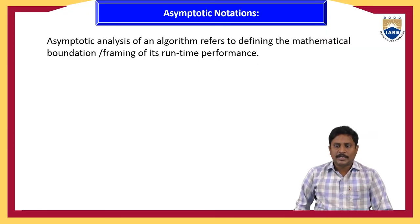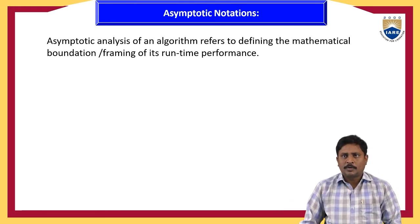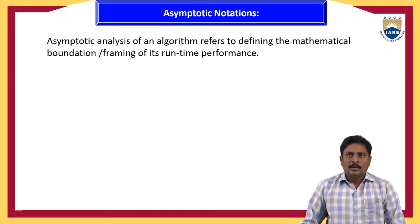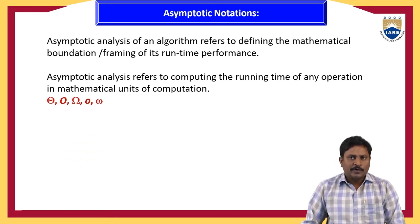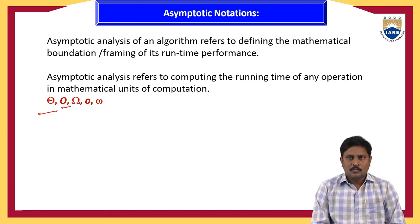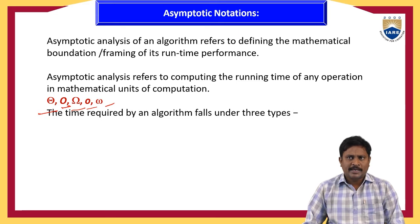First, what is meant by asymptotic notation? Asymptotic analysis of an algorithm refers to defining the mathematical foundation or framing of its runtime performance. Asymptotic analysis refers to computing the runtime of any operation in mathematical units of computation. Here we mainly have five different types of asymptotic notations: theta, big O, omega, little o, and little omega.